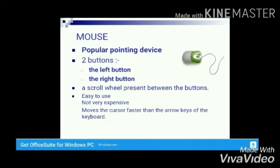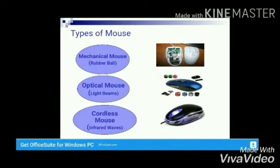There are different types of mice: the mechanical mouse, the optical mouse, and the cordless mouse. The mechanical mouse has a rubber ball on the bottom that helps it move on a flat surface. The optical mouse uses light beams to move the cursor. The cordless mouse, also called the wireless mouse, uses infrared waves to move the cursor.